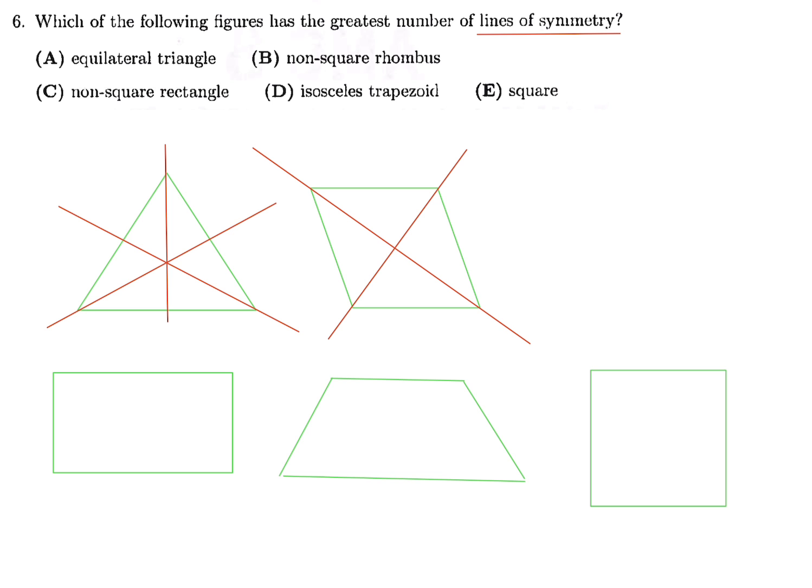For a rectangle, we've got, let's see here, I'm just cutting it in half like this. For a trapezoid, I think just that's the only line of symmetry. For a square, we've got these guys, top and bottom and sideways, but then also the diagonals for a square would work like that. So let's count these now. For the triangle it was 3, for the non-square rhombus it was 2, for the non-square rectangle 2, isosceles trapezoid 1, and for the square those 4. So therefore the greatest number is for the square. So number 6, the answer is E.